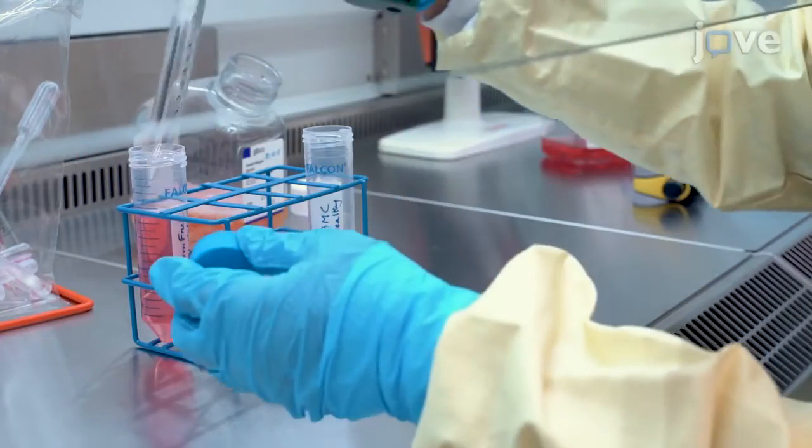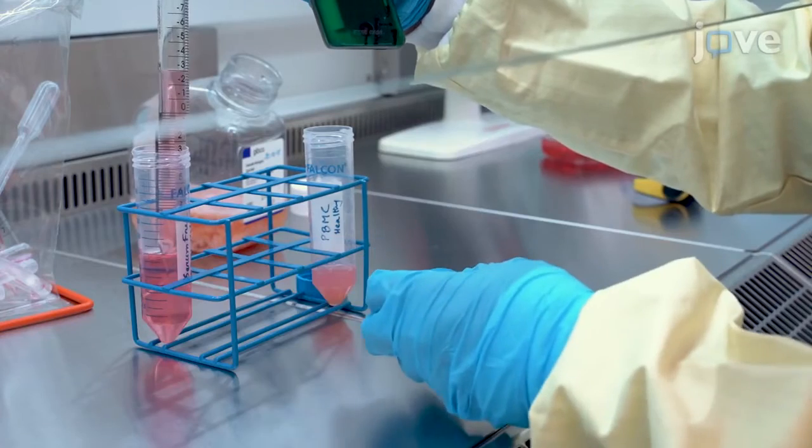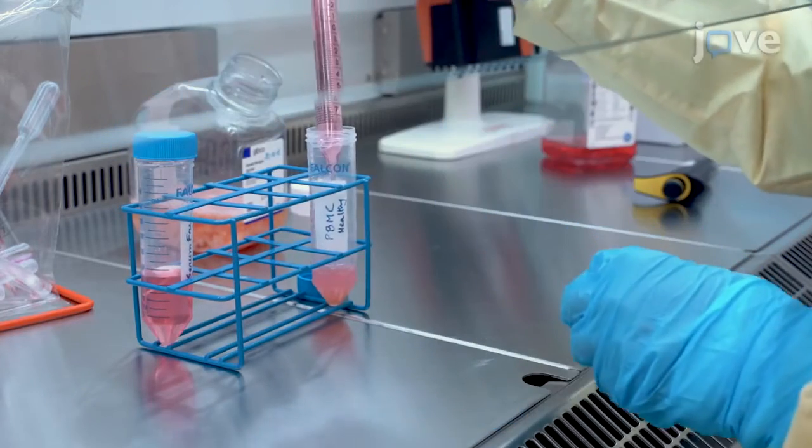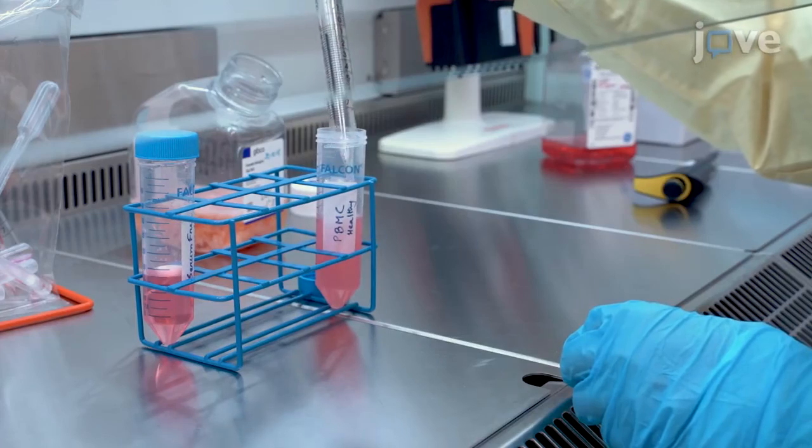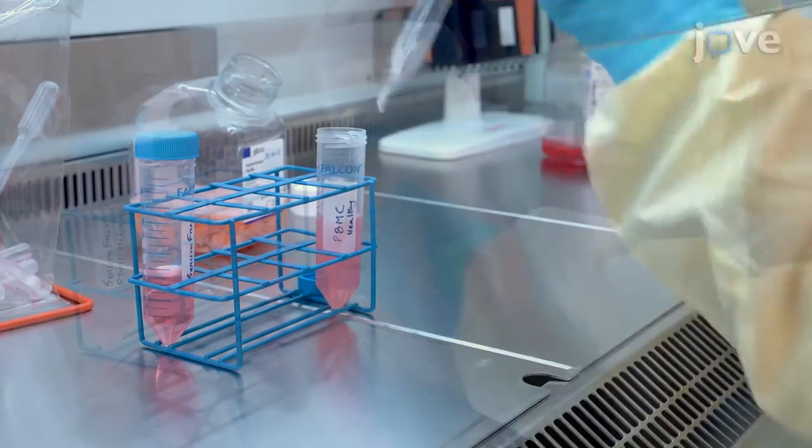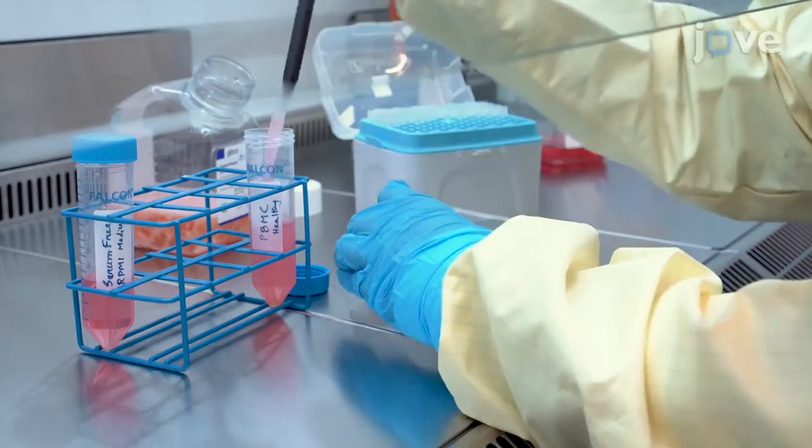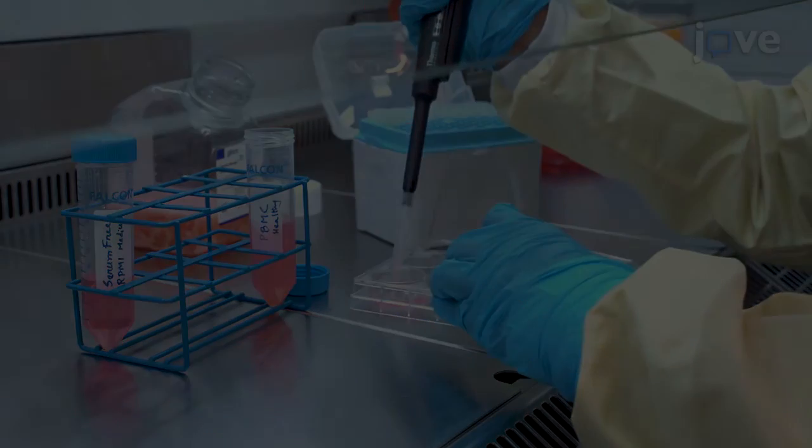To initiate macrophage differentiation, dilute the cells to a 5×10⁶ cells per milliliter of serum-free medium concentration and seed 2 milliliters of cells into individual wells of a 6-well plate.